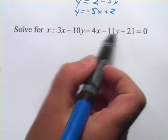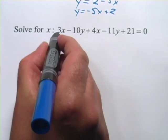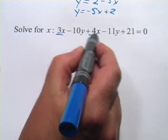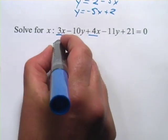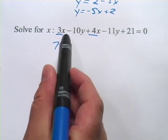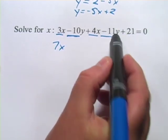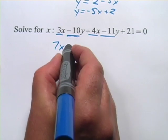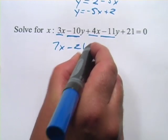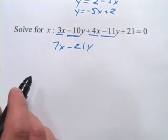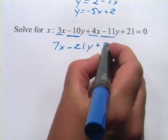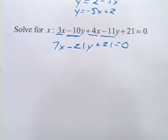Again, the place I'll start is just by combining like terms. I've got a 3x and a 4x, they're both positive, so that's going to be 7x. And then I've got a negative 10y and a negative 11y. That adds up to negative 21y. And then I've got my positive 21 equals 0. So there it is after combining the like terms.